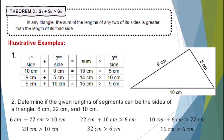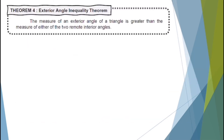Make sure that when we add any two sides of a triangle, their sum is greater than the third side. If even one inequality is not correct, those lengths cannot be the sides of a triangle. That is Theorem 3. Now let's proceed to Theorem 4: The measure of an exterior angle of a triangle is greater than the measure of either of the two remote interior angles.